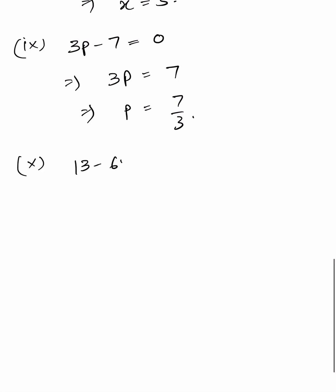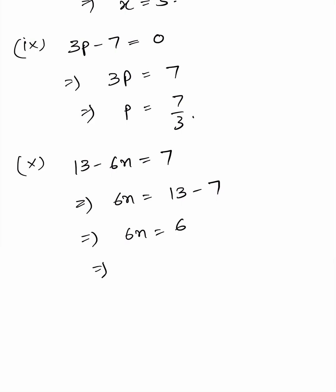Tenth: 13 minus 6n equals 7, so 6n equals 13 minus 7, giving 6n equals 6, and therefore n equals 6 divided by 6, which equals 1.